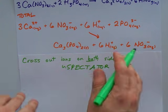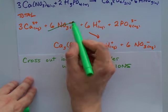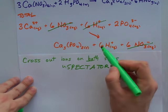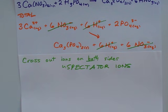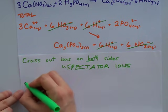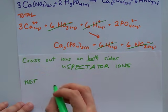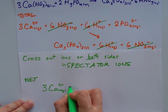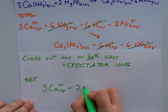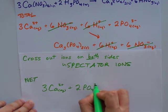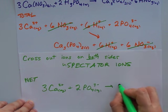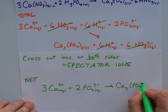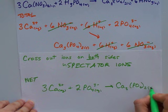So, to cross out things that are on both sides, I've got 6 nitrates on the left and 6 nitrates on the right. And so my net ionic equation is simply 3 calcium 2+ ions with 2 phosphate ions, making sweet love to become calcium phosphate. That's Ca3(PO4)2 solid.